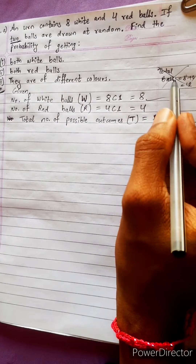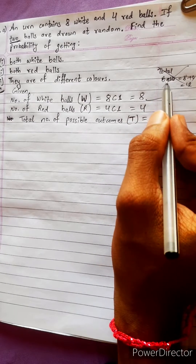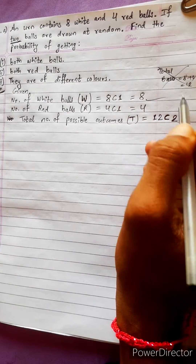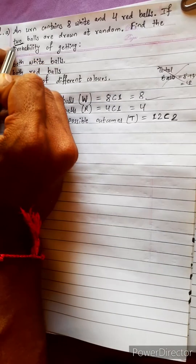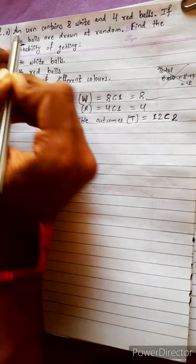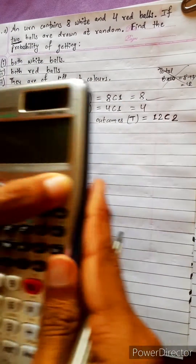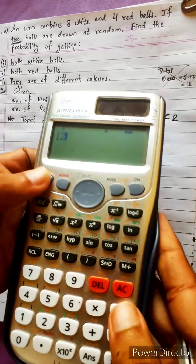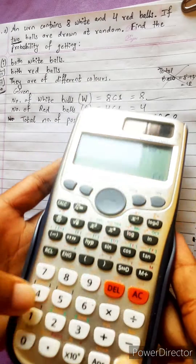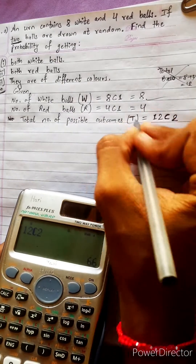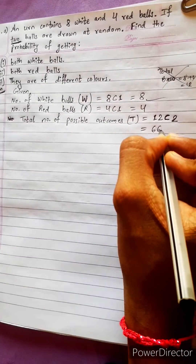People make a mistake here. Total number of balls equals 8 plus 4 equals 12, and since two balls are drawn, we should not forget to combine with 2. So 12C2 equals 66. Total number of possible outcomes is 66.